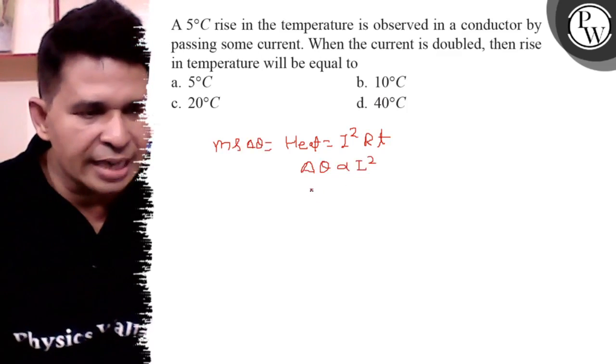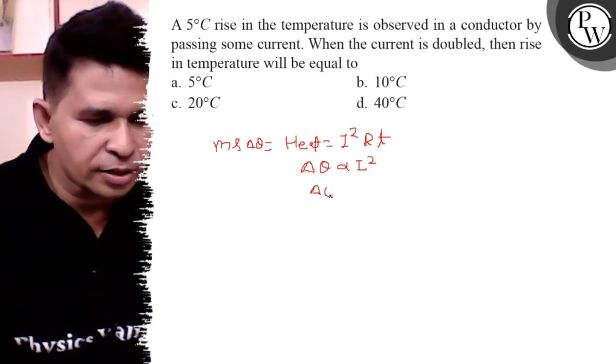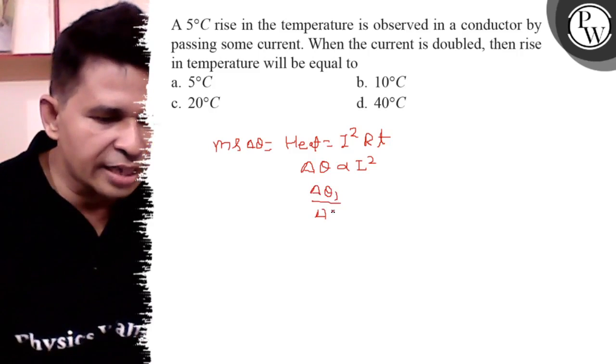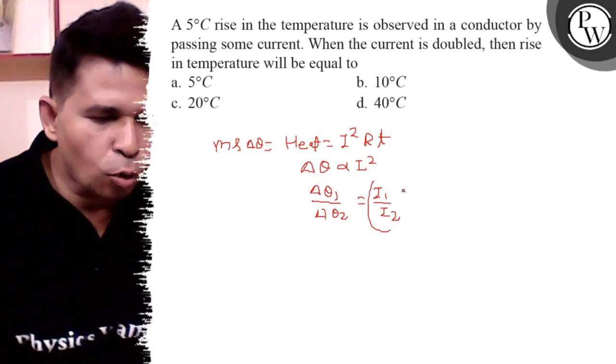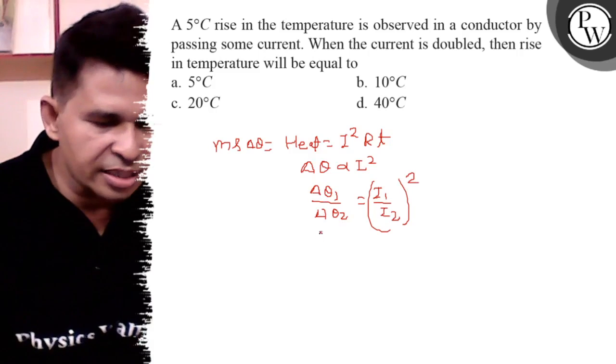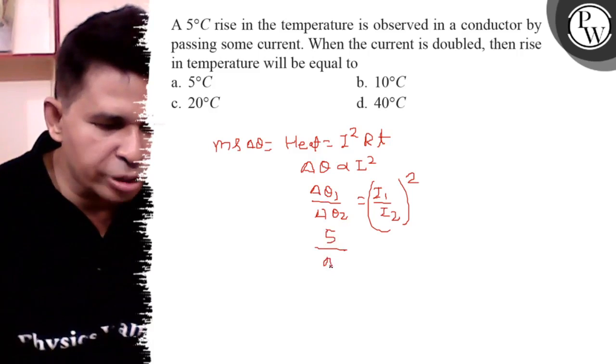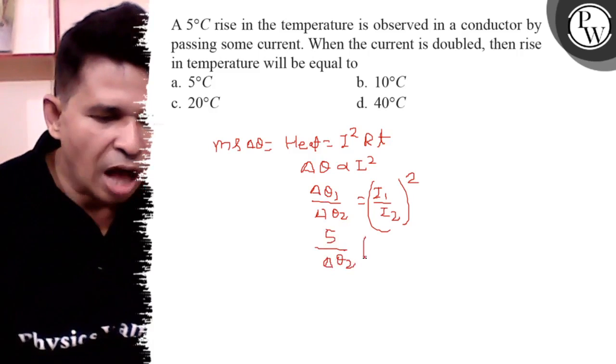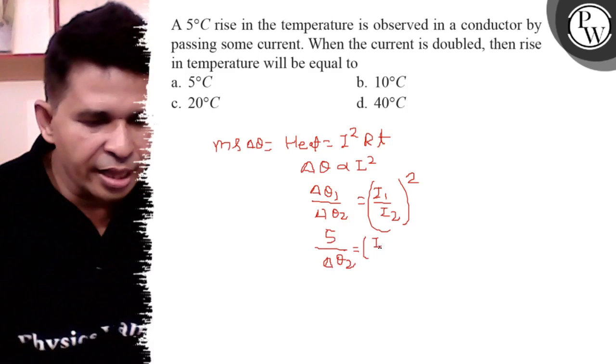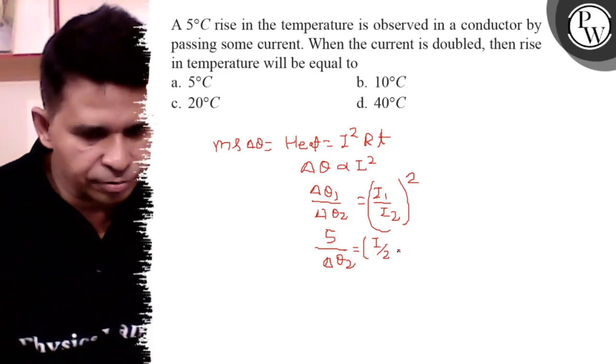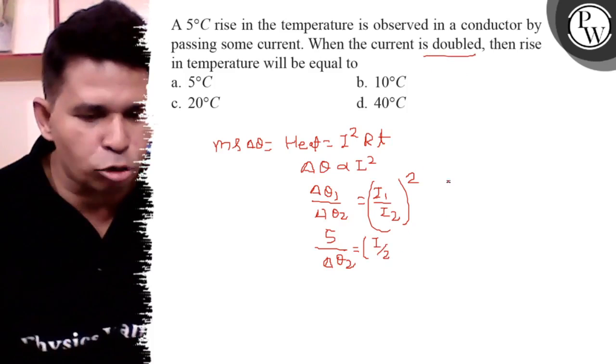So delta theta 1 upon delta theta 2 is equal to I1 upon I2 whole square. Delta theta 1 is 5, we have to determine the delta theta 2. I1 is I and it is 2I because current is doubled in question.